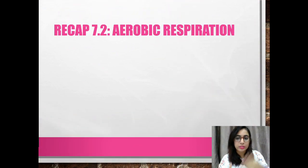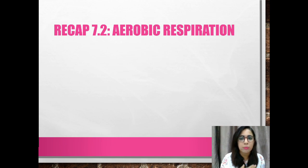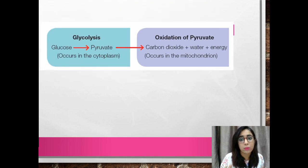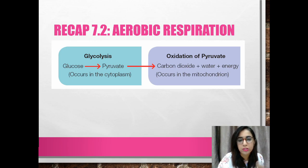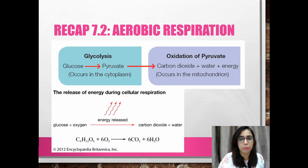Before we go into anaerobic respiration, let us recap a little on aerobic respiration. From the previous lesson, you know that cellular respiration always starts with glycolysis. From there, there are two pathways determined by the presence of oxygen. If oxygen is available, aerobic respiration occurs in the mitochondria, where pyruvate is broken down in a series of biochemical reactions into carbon dioxide, water, and energy.